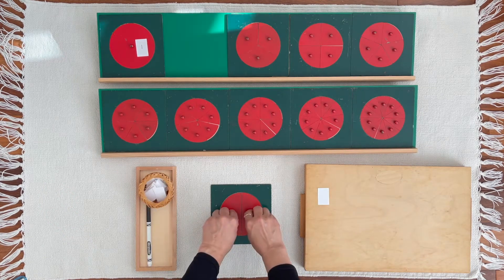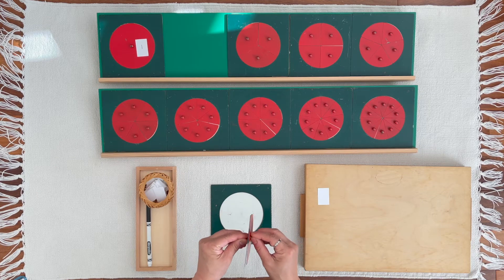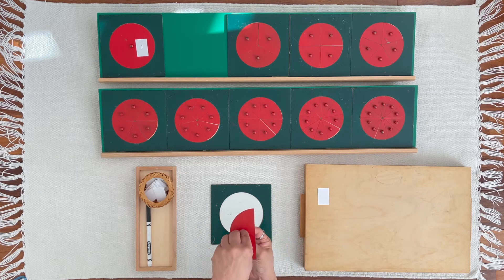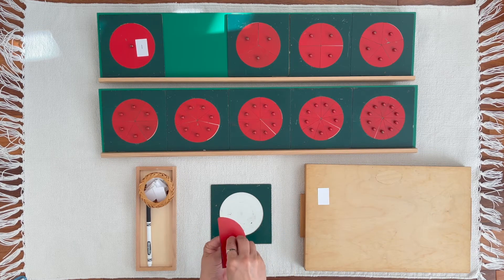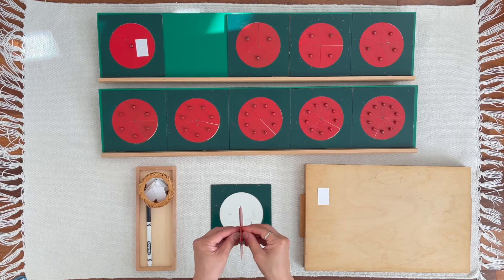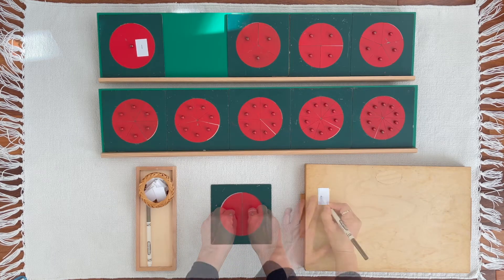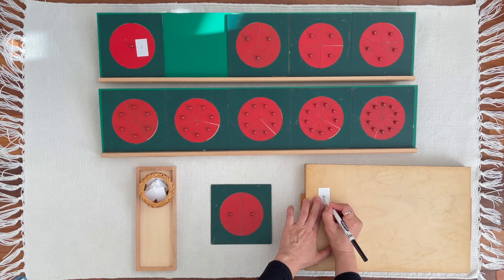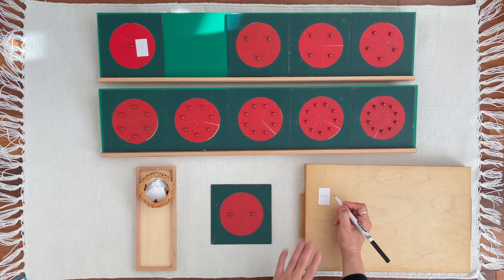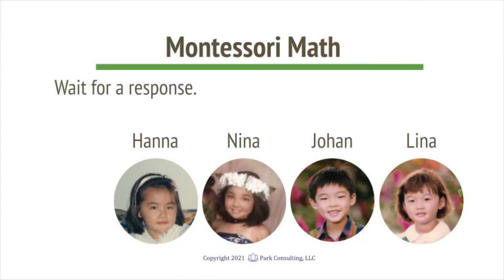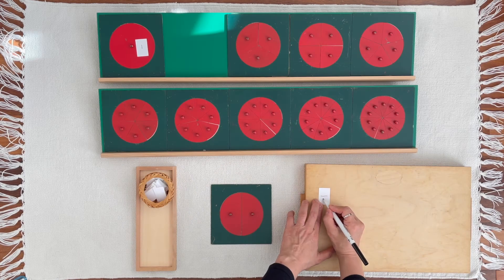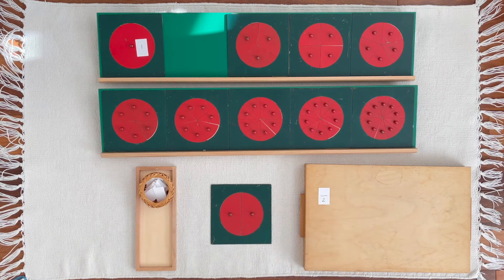The whole can be divided into equal parts. How many parts is this circle divided into? Yes, this circle is divided into two parts. Two is the family name because there are two equal parts of this circle.